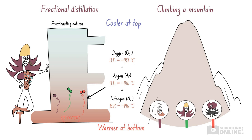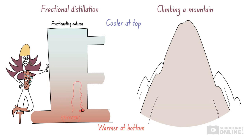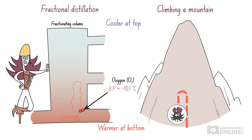If you remember from before, Blackbeard didn't really want to climb the mountain — he did it for the gram. But as we saw, he bailed and went back down the mountain. Now, oxygen does the same thing as Blackbeard. Oxygen boils at a higher temperature than the other components of this mixture, meaning we need to warm oxygen up by a lot so that it turns into a gas. In other words, oxygen doesn't really want to turn into a gas — it just wants to remain as a liquid. Therefore, it drops back down the fractionating column.